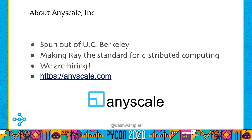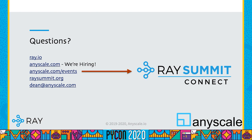We are hiring, even in this COVID era, and you can find out more at anyscale.com. Ray.io is the place to go for information about Ray. AnyScale.com has job openings and information about events like the Ray Summit Connect series — online events starting in May. Ray Summit itself was moved from May and will most likely happen in November. Feel free to reach out to me at dean@anyscale.com, especially if you want the slides. Thank you so much, and I hope you enjoy this talk.